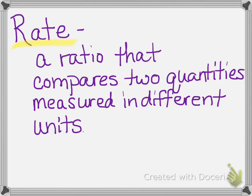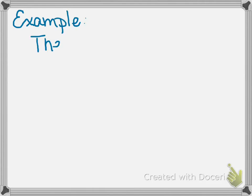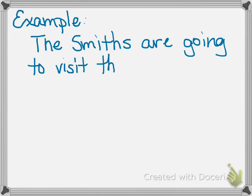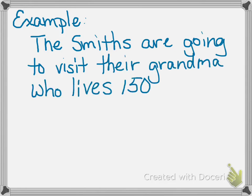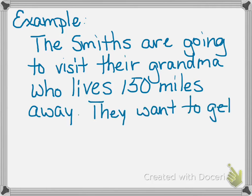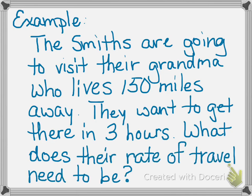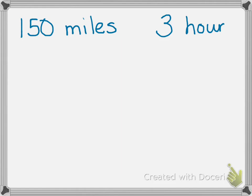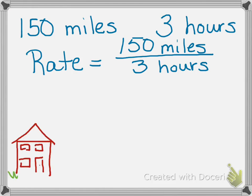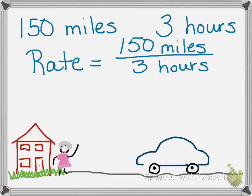Let's look at an example of a rate. It's the holidays — the Smiths are going to visit Grandma, who lives about 150 miles away. They need to get there in three hours so they're not late for their turkey dinner. We want to know their rate of travel. We know they have to travel 150 miles and it takes three hours, so we set up a rate: 150 miles over three hours. This gives us our rate — the Smiths are traveling 150 miles in three hours.